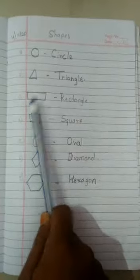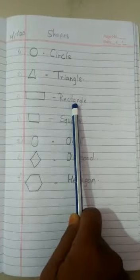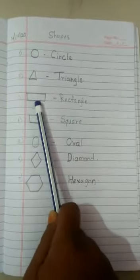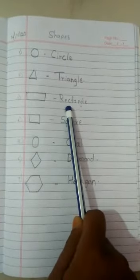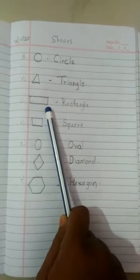The next rectangle. Rectangle spelling is R-E-C-T-A-N-G-L-E rectangle. R-E-C-T-A-N-G-L-E rectangle.